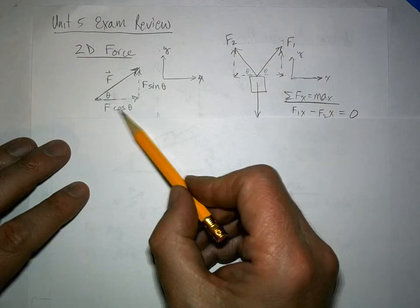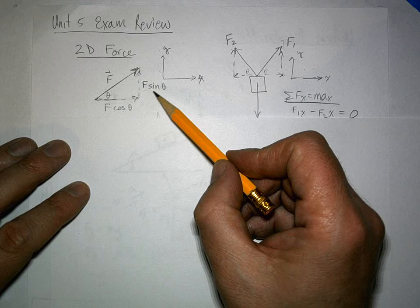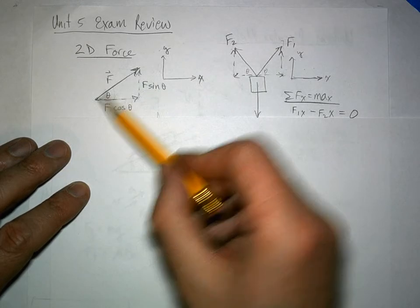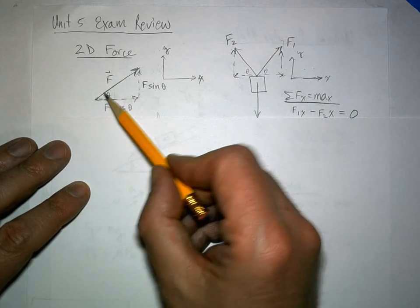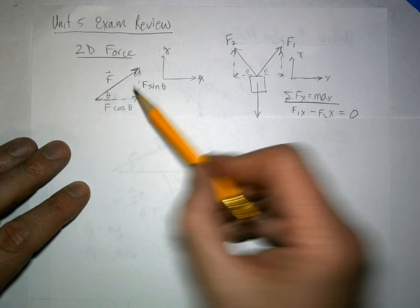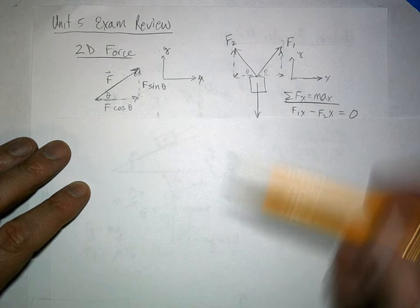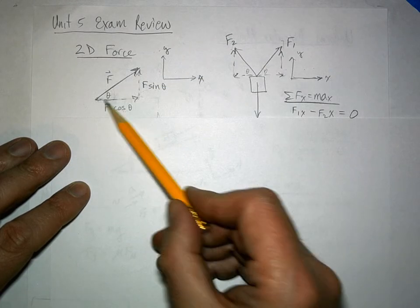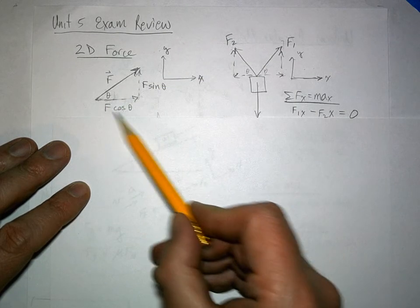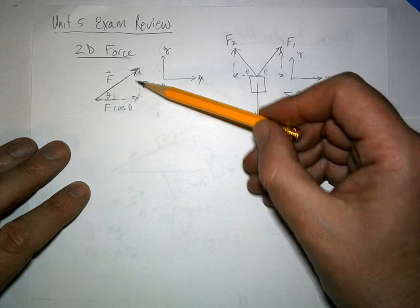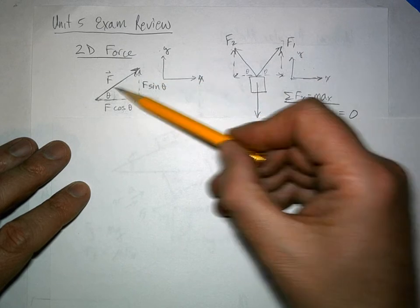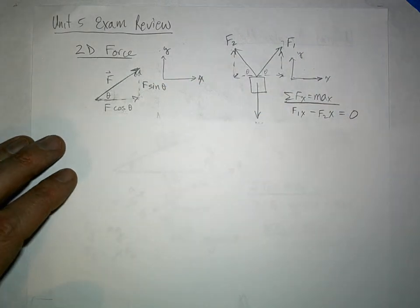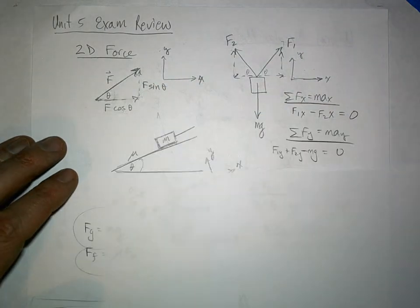The way to remember what's cosine and what's sine is by looking at the triangle. If you have a force and you're breaking it up into components, the component adjacent to the angle uses cosine; the opposite component uses sine.